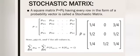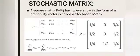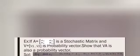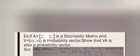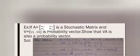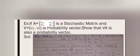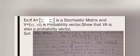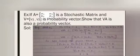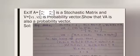Hence it is a stochastic matrix. Let us take up an example to gain clarity over the topic. Example: If A = [a1, a2; b1, b2] is a stochastic matrix and V = [v1, v2] is a probability vector, show that VA is also a probability vector.